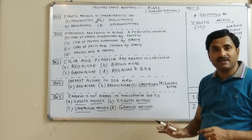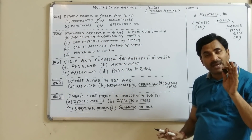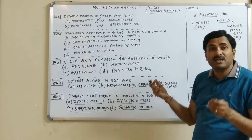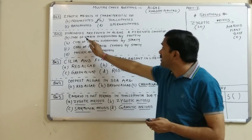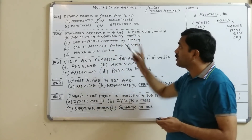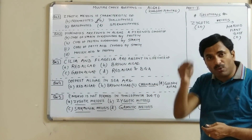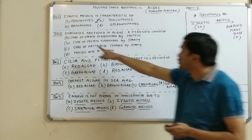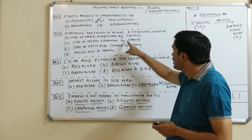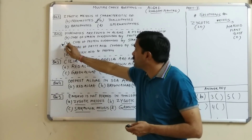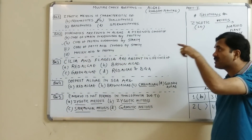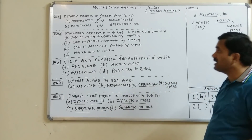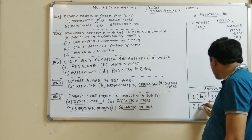Question number two: pyrenoids are found in algae. Pyrenoids are found in the chloroplast of algae. The question asks what pyrenoids are made up of. The pyrenoid core or center part is made up of protein and it is surrounded by starch. So the core is protein surrounded by starch, and question number two has answer B.